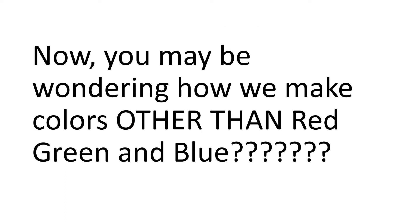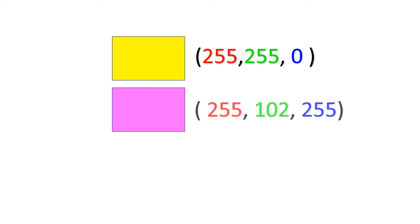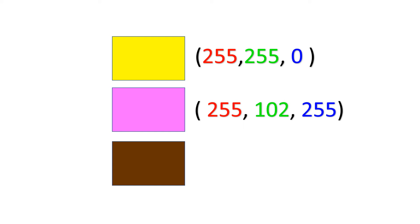Now you may be wondering how we can make colors other than red, green, and blue. To do this, we mix the different RGB colors together. Different values of R, G, and B will give us different colors. For example, yellow is 255 red, 255 green, and 0 blue. For pink it'd be 255 red, 102 green, and 255 blue. And 102 red, 51 green, and 0 blue makes the color brown.